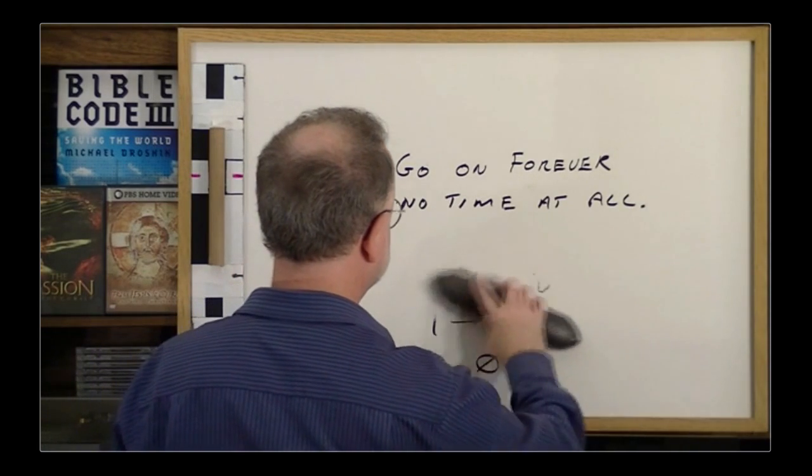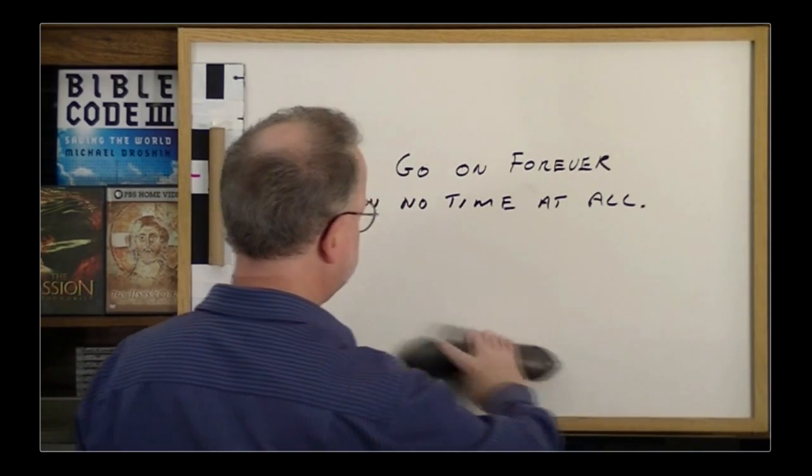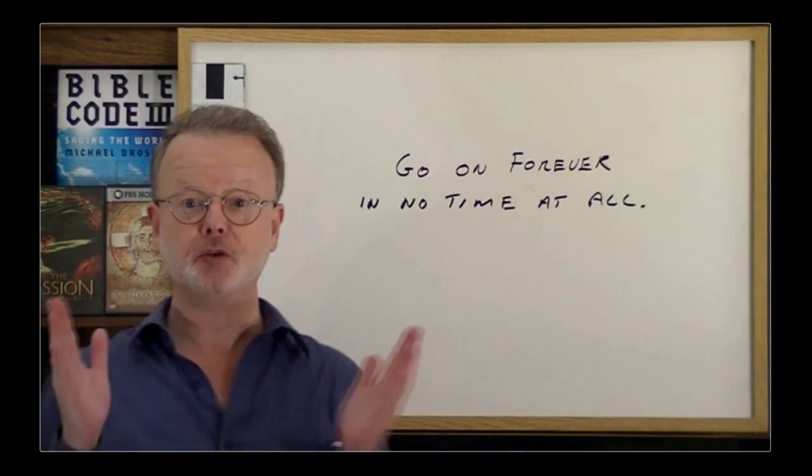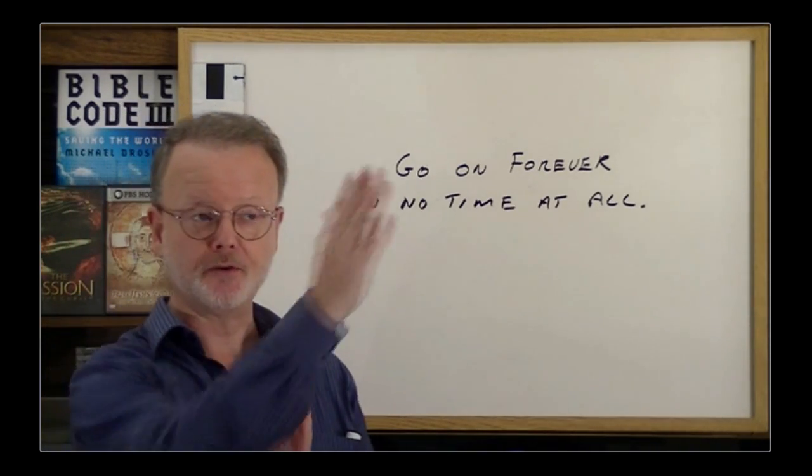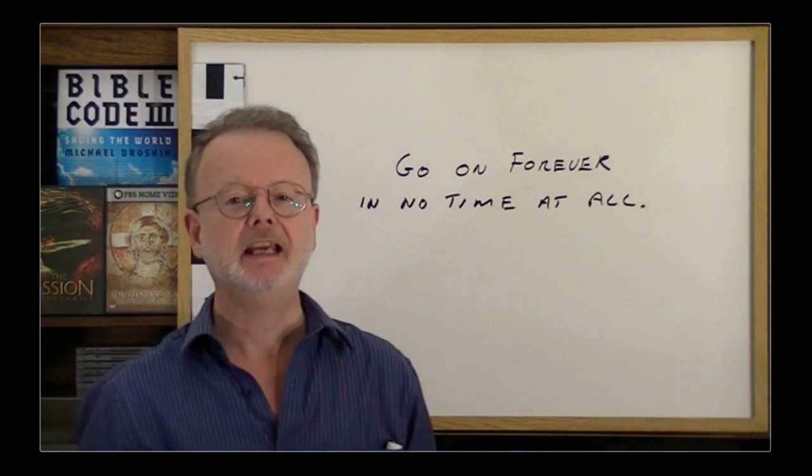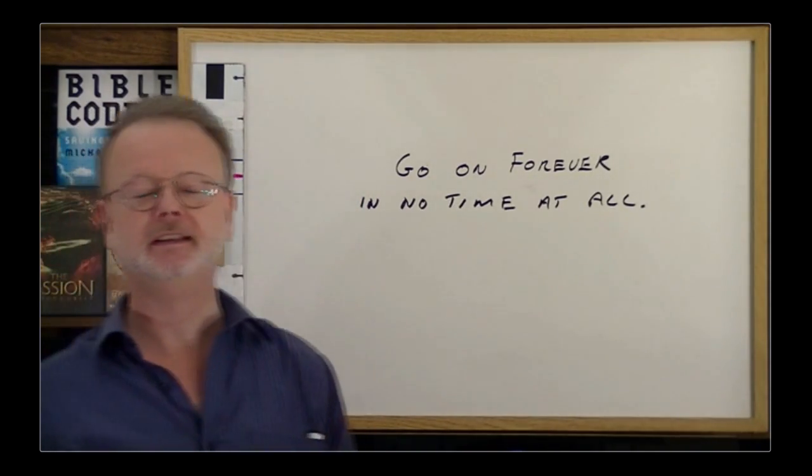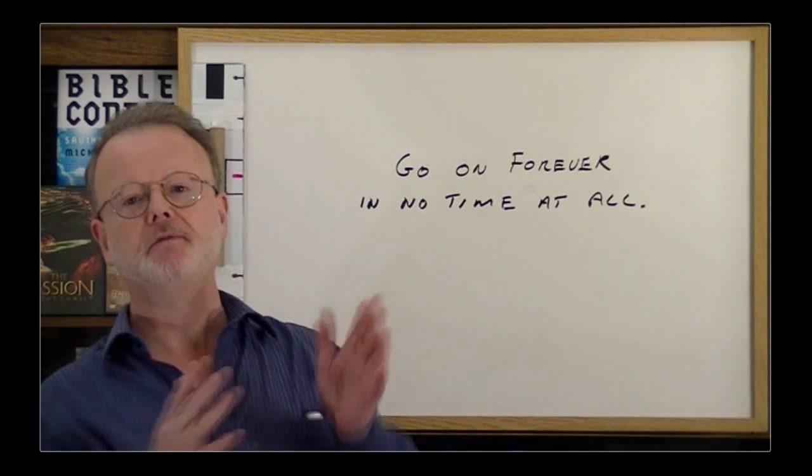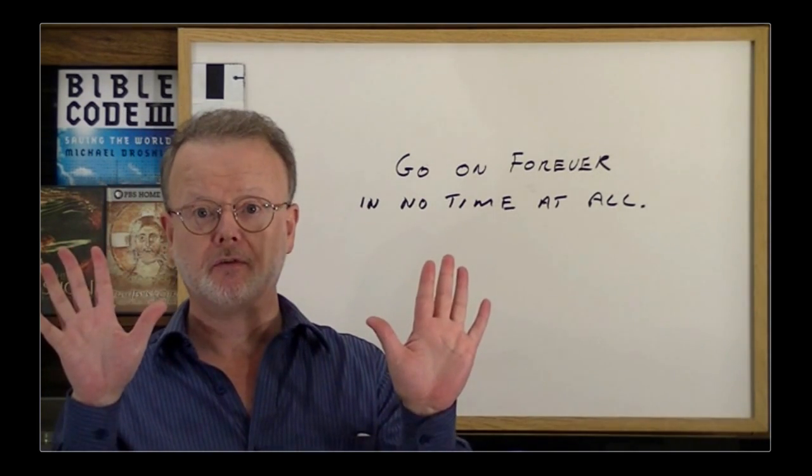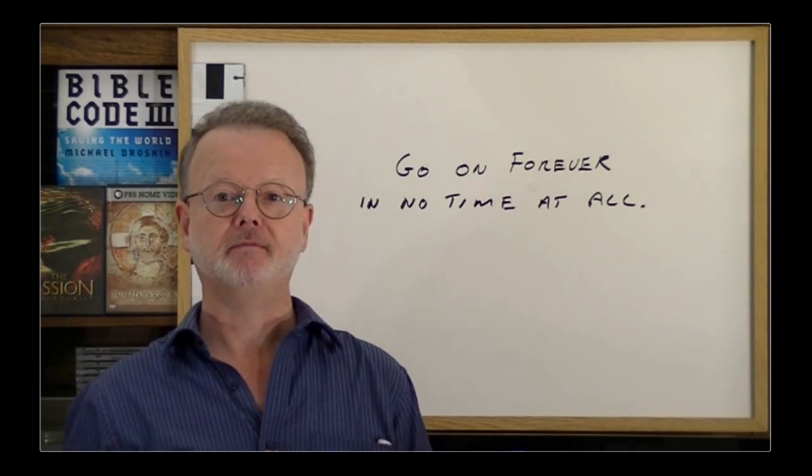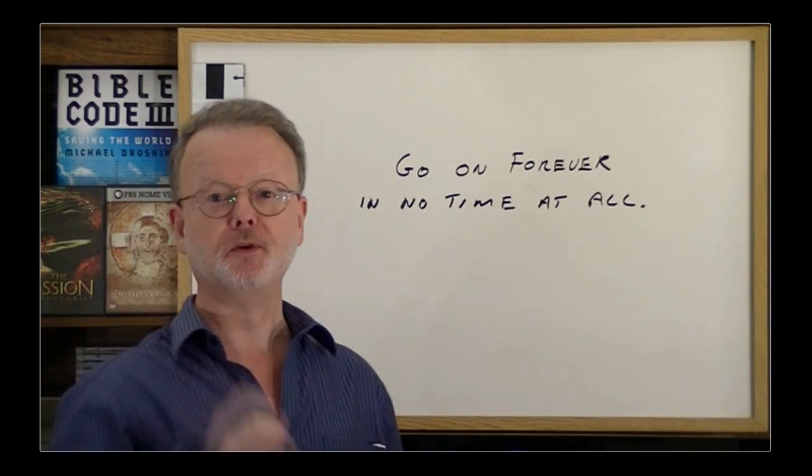There we basically have the two pieces of information. So you put them together as you're traveling across your infinite distance at an infinite speed - it simply means that you will go on forever in no time at all. So that means you'll go on forever, which means it'll never finish, but it'll all be over with in no time at all because you're traveling at an infinite speed. It'll never finish, but it'll all be over with in no time at all.